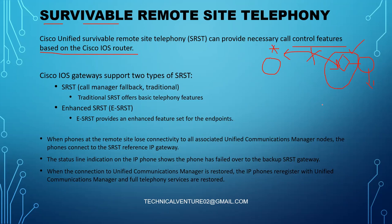That's where SRST kicks in on the gateway. You need to enable the configuration on that particular gateway to make it an SRST — either normal SRST or enhanced SRST. Normal SRST provides basic call control features, while enhanced SRST provides more features. A Cisco IOS gateway supports two types: traditional SRST, also called Call Manager Fallback, which offers basic telephony features, and enhanced SRST (e-SRST), which provides an enhanced feature set for the endpoints.